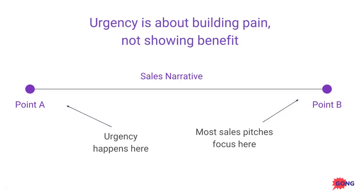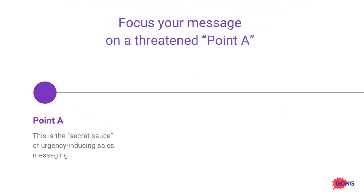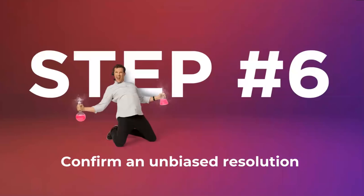What creates urgency is building the pain and perceived unsustainability of point A. Only after you've done that will point B resonate. The secret sauce of urgency-inducing sales messaging is to tear apart the status quo — tear apart point A — before you introduce point B.